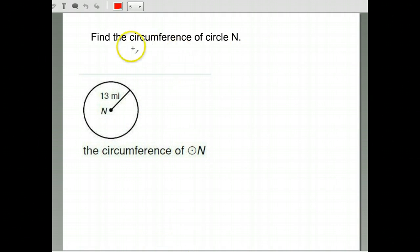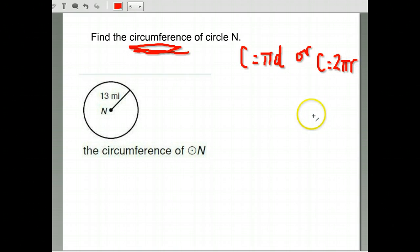Okay, this one says find the circumference of circle N. Circumference—we talked about it. It has two possible formulas. You can either do pi times the diameter, or you can do 2 times pi times the radius. Either one of these works.